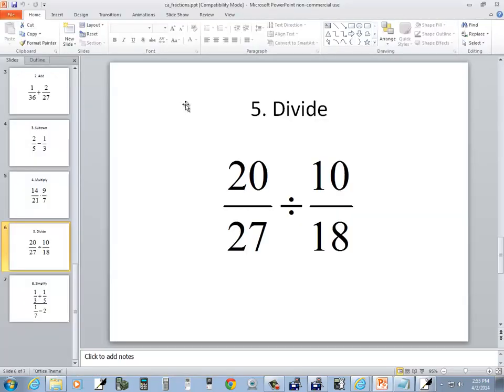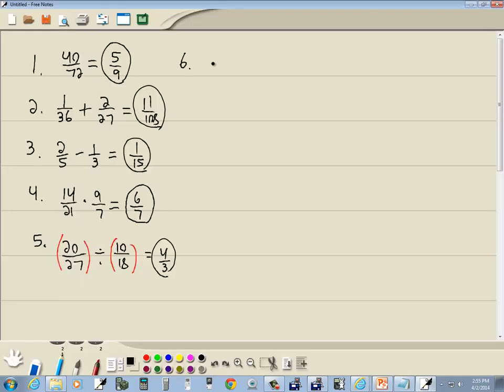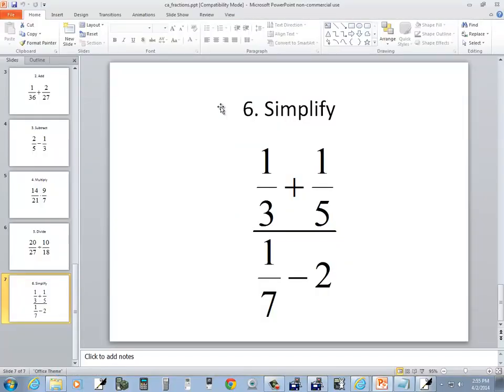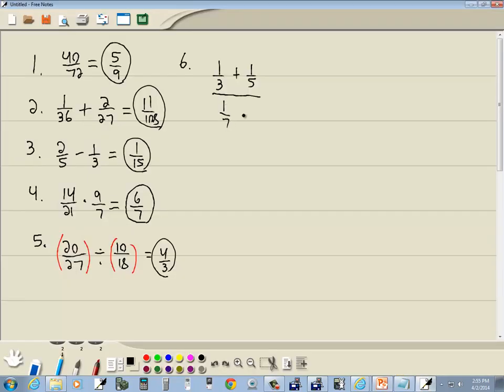Let's look at our last fraction. We've got 1 third plus 1 fifth all over 1 seventh divided by 2. This is a complex fraction. A complex fraction is a fraction inside of a fraction. Whenever you have more than a single number or a single variable on top or bottom of a fraction, you need to put parentheses around it.